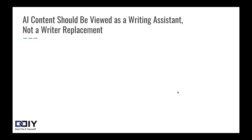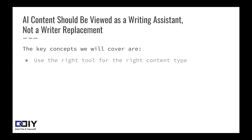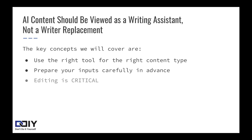AI content should be viewed as a writing assistant, not a writer replacement. So the key concepts we're going to cover in this course are that you need to use the right tool for the right content type, prepare your inputs carefully in advance before using the tool, and then editing is critical. You really need to spend time after AI content is generated on wording, the flow and sequence of your content, fact checking, and plagiarism checking.